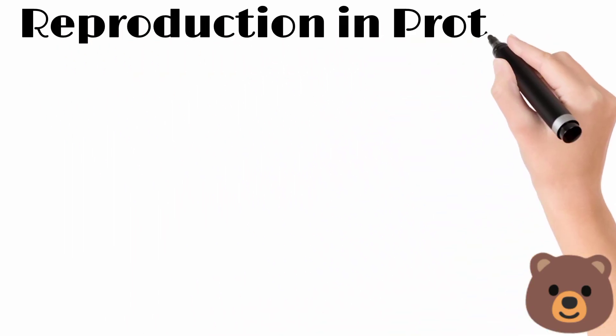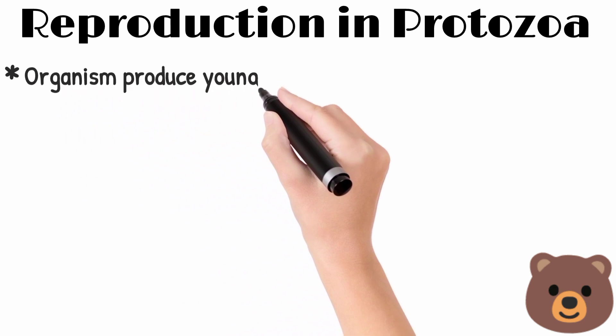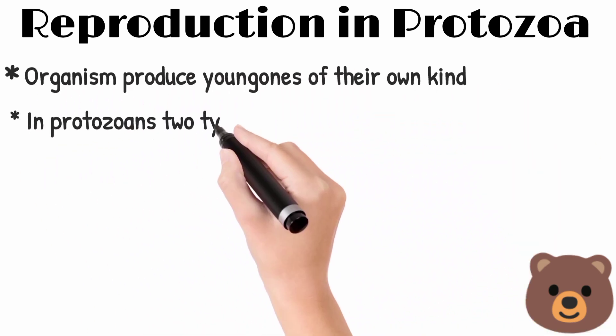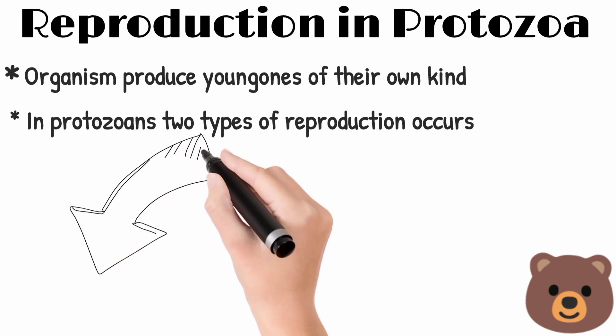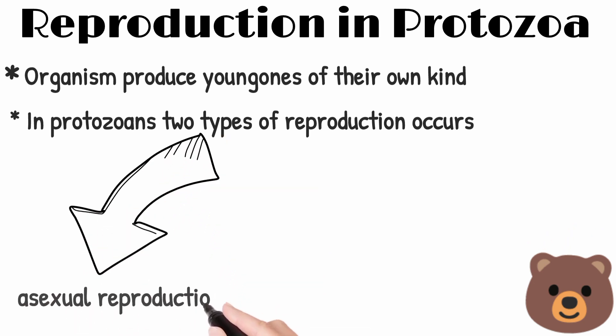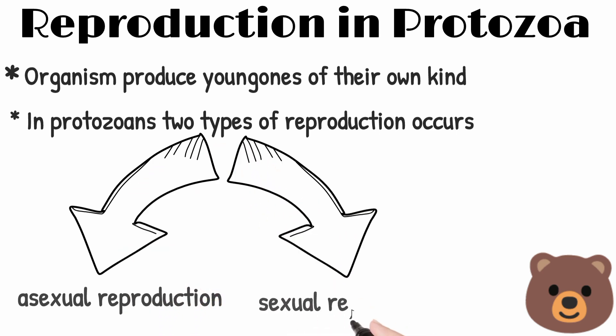Reproduction in protozoa. Reproduction means organisms produce young ones of their own kind. In protozoa, two types of reproduction occur: number one is asexual reproduction and number two is sexual reproduction.